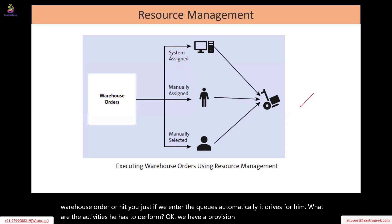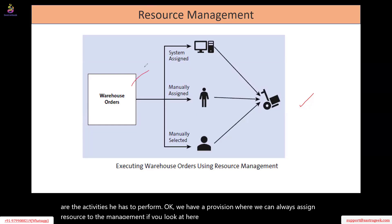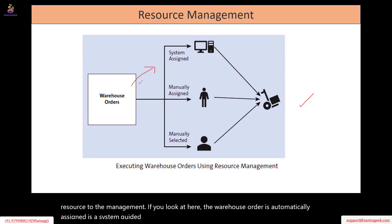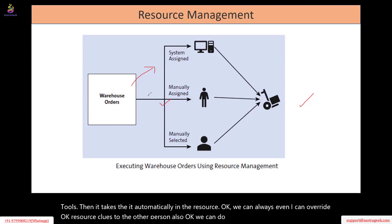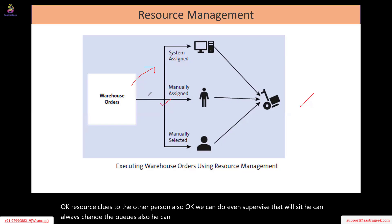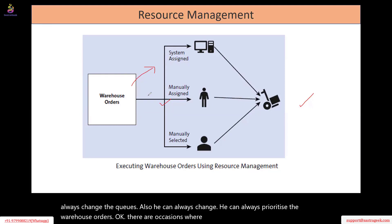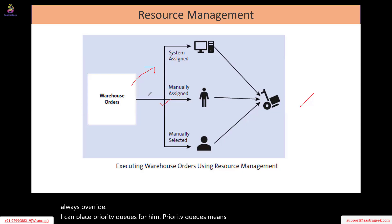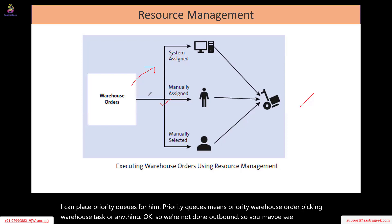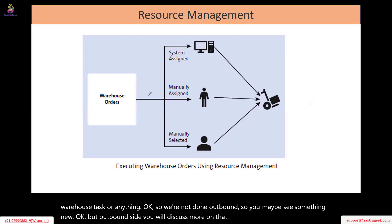We have a provision where we can always assign resource to the management. The warehouse order is automatically assigned — it's system guided. Whatever the warehouse order, the system guided: if you log into the queue, it automatically assigns the resource. We can even override — resource queues can be reassigned to another person. Even a supervisor can always change the queues, change and prioritize the warehouse orders. There are occasions where, assuming the system has guided certain activities, but because of some warehouse or customer demand, I can always override and place priority queues — priority warehouse order, picking warehouse task or anything.